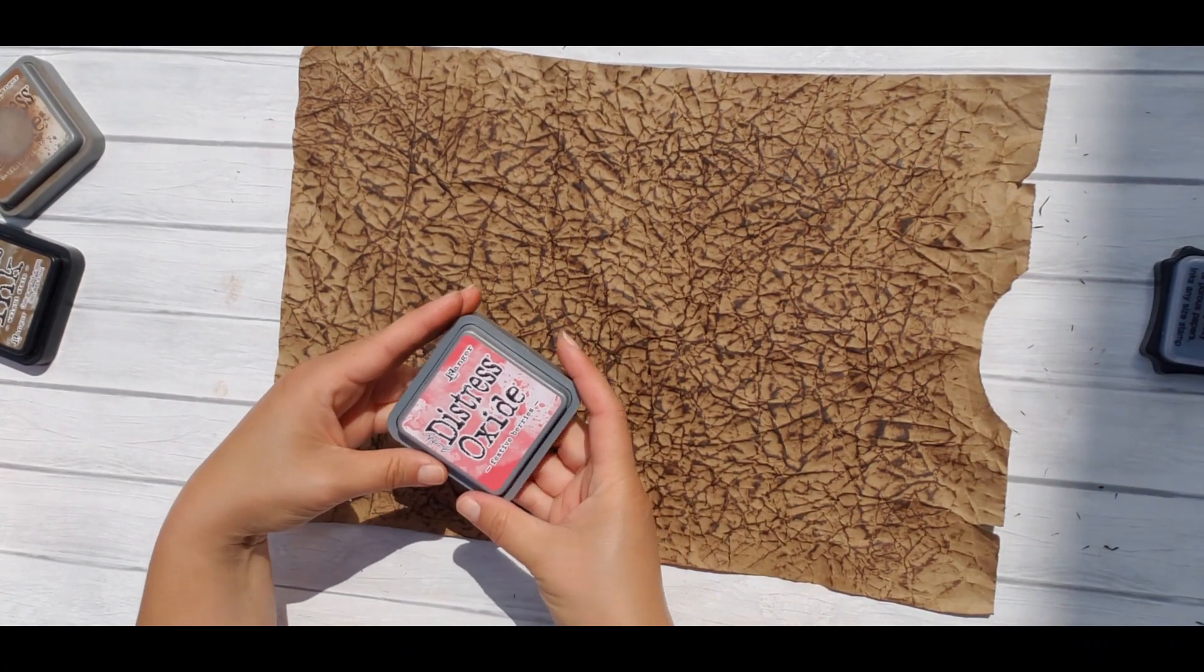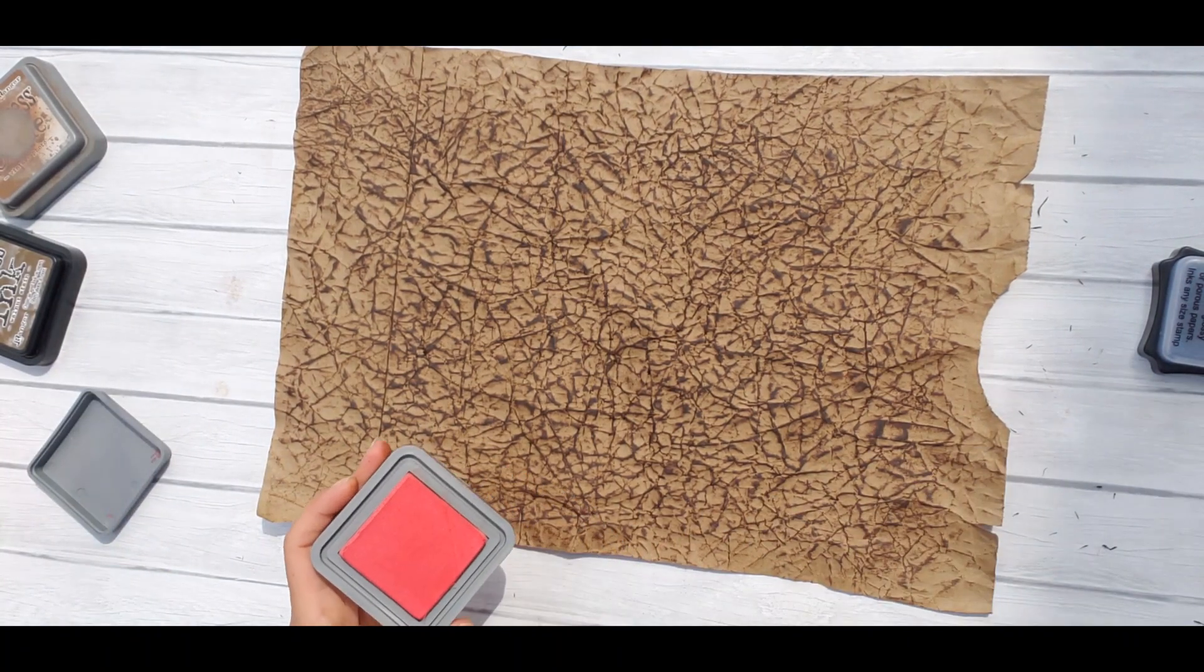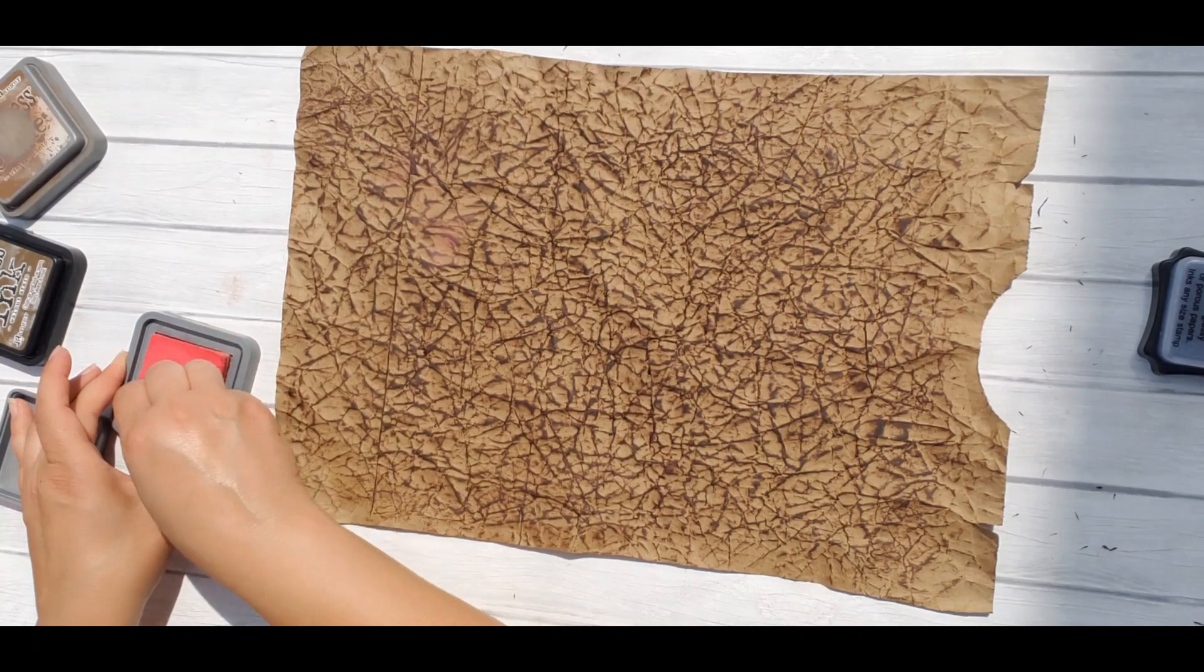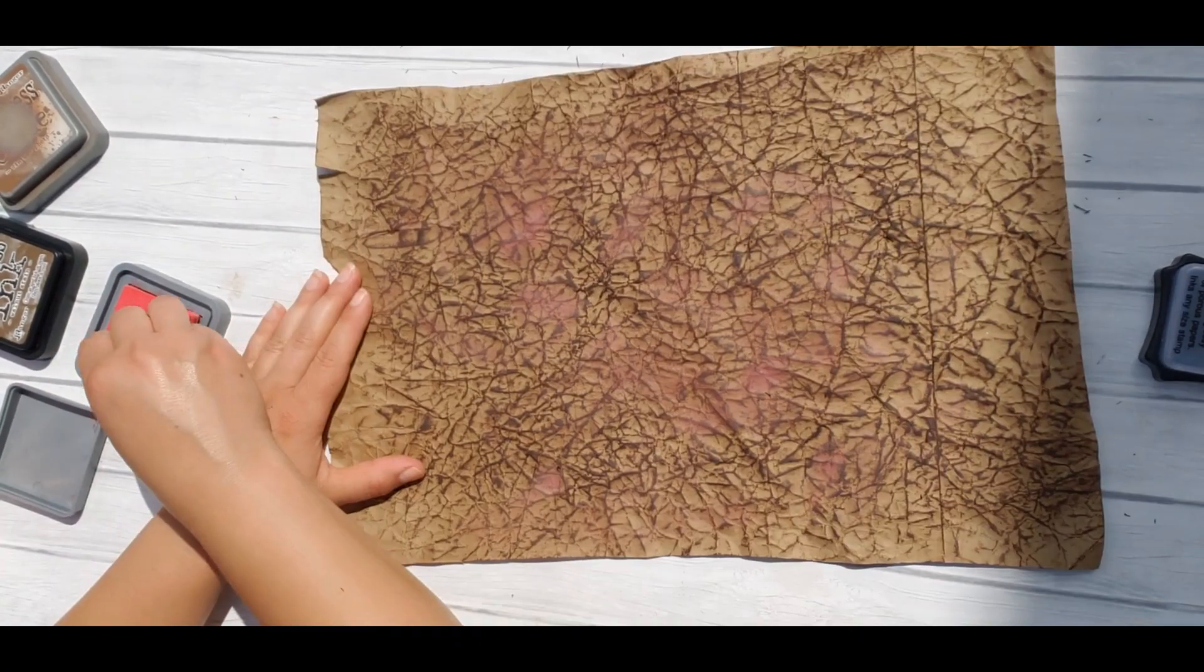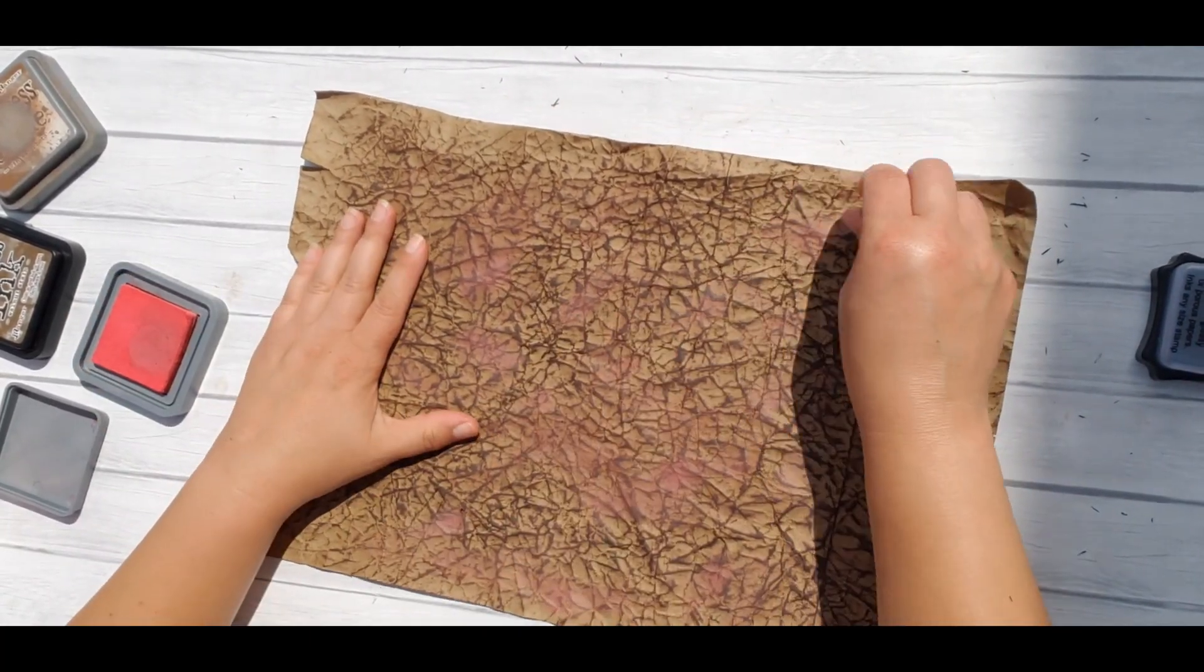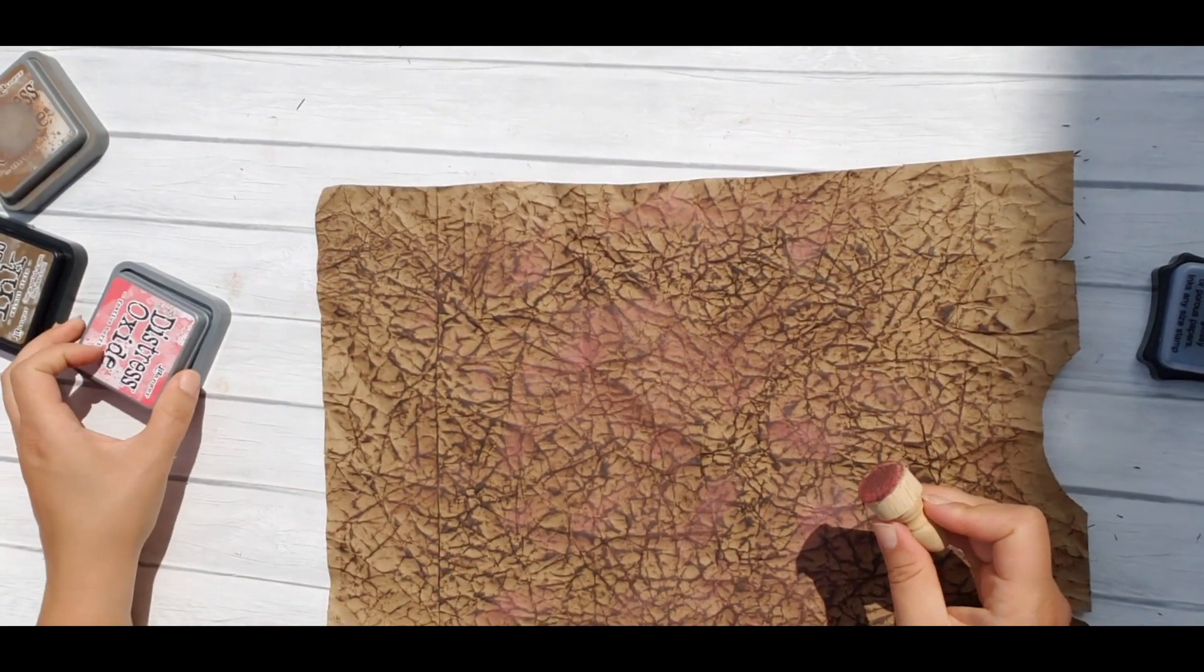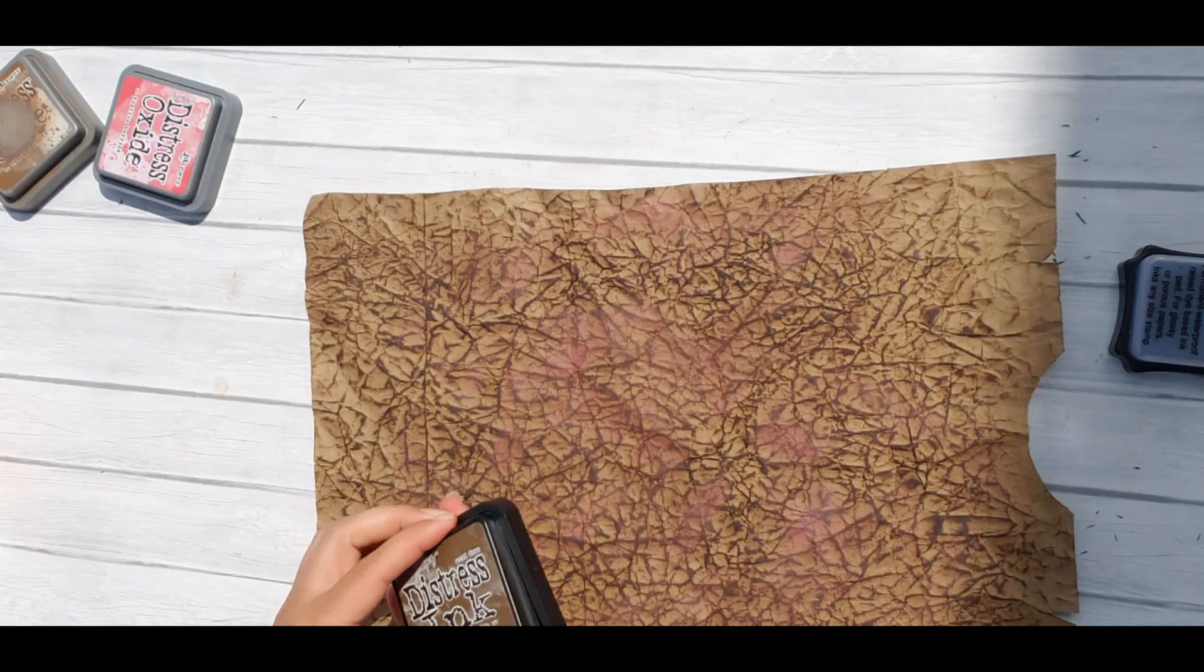And I think I want to add a little bit of a red hue. So I'm going to use Festive Berries Distress Oxide by Ranger. Just lightly. Here and there. It kind of gives it a pinkish almost look. So I'm going to knock it down with a little bit more walnut stain.